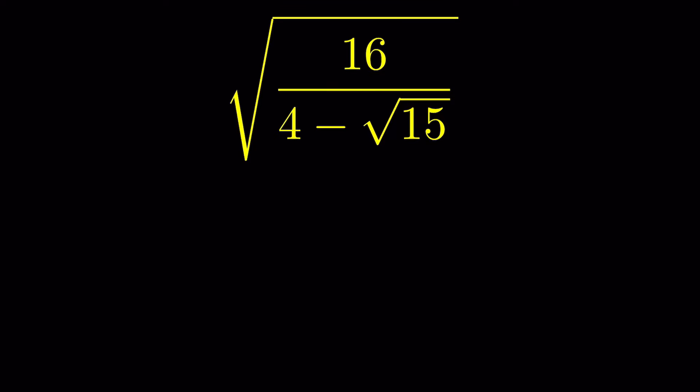To rationalize the denominator, we multiply and divide by the conjugate of the denominator. The conjugate of x plus y is x minus y, so the conjugate of 4 minus square root of 15 will be 4 plus square root of 15. So we multiply and divide by this conjugate.